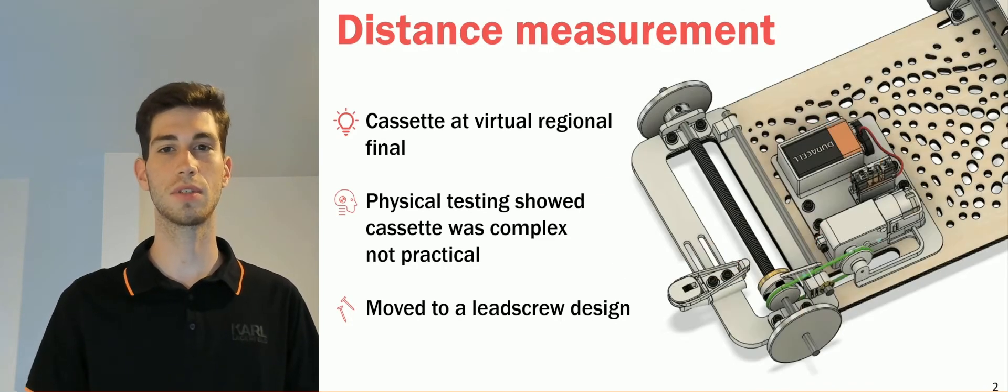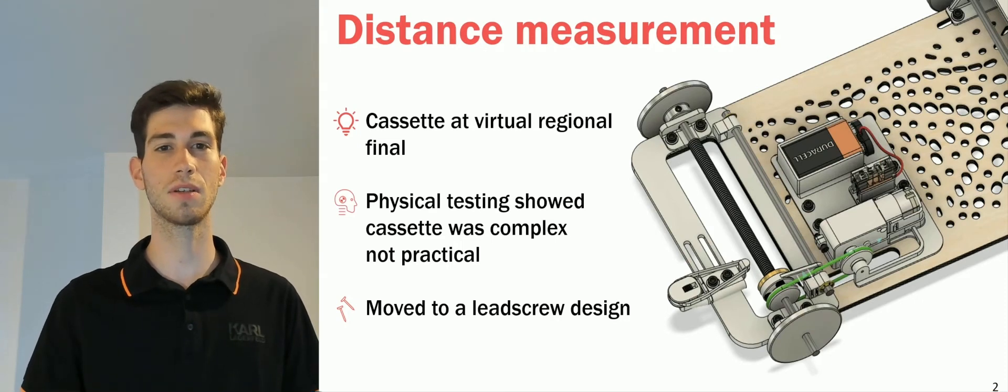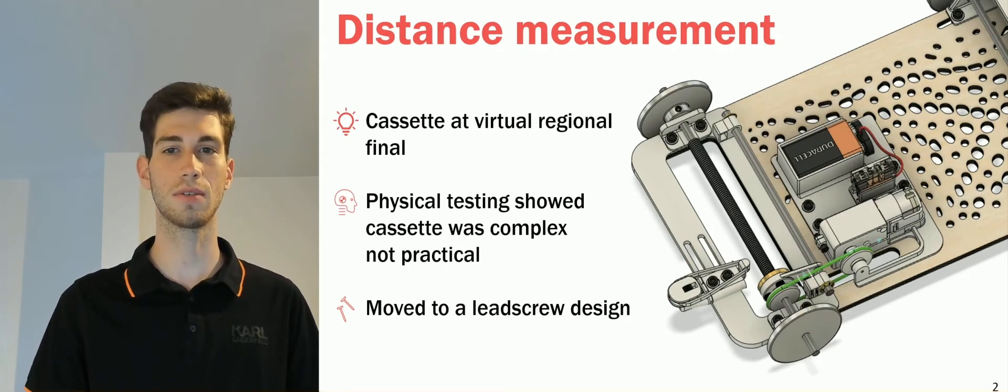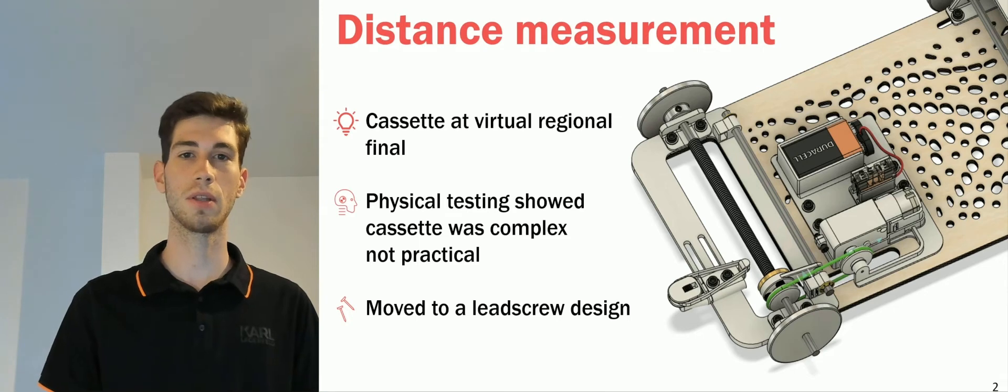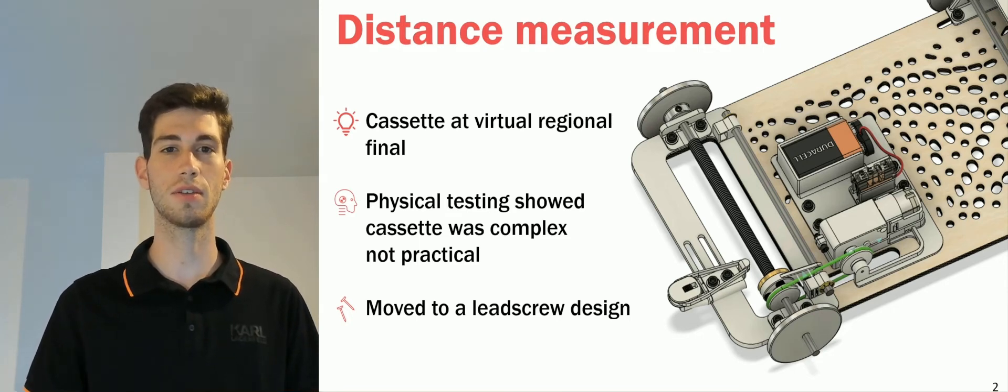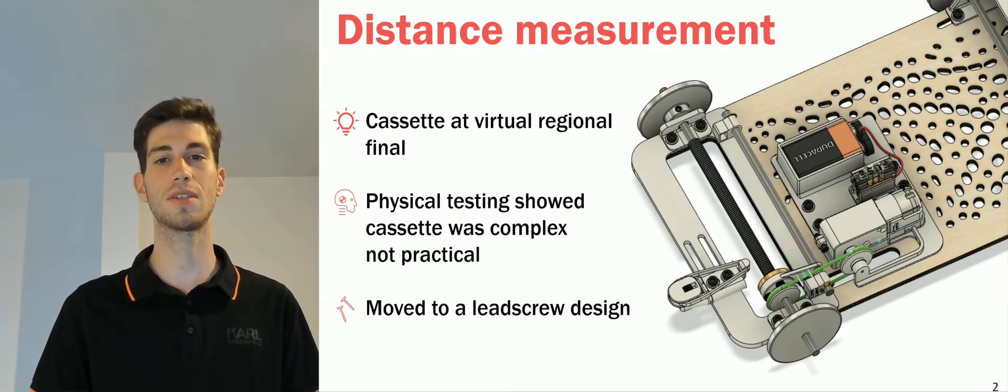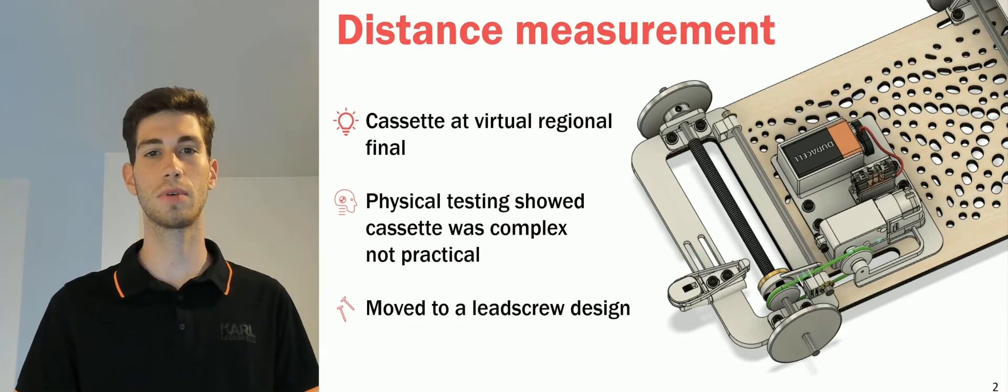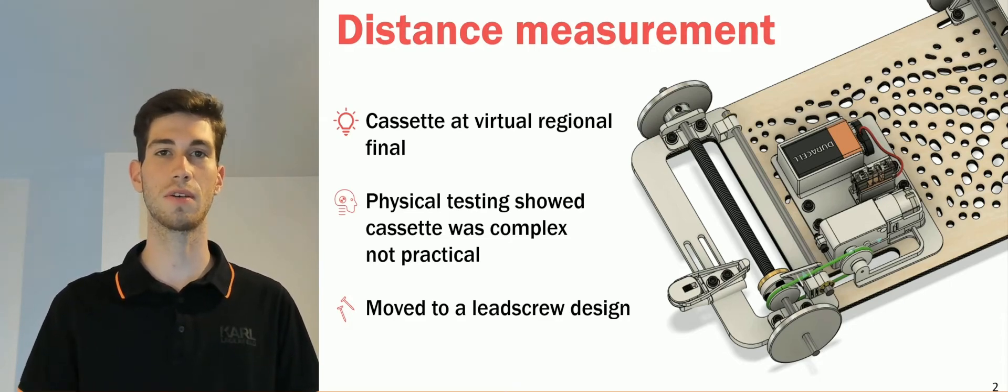We therefore moved to a leadscrew design. As you can see, by preventing its rotation, a nut moves along the axle as the car moves forward. When the car changes direction, the lead nut travels the other way until it reaches its starting position, at which point it pushes a button which switches off the motor.